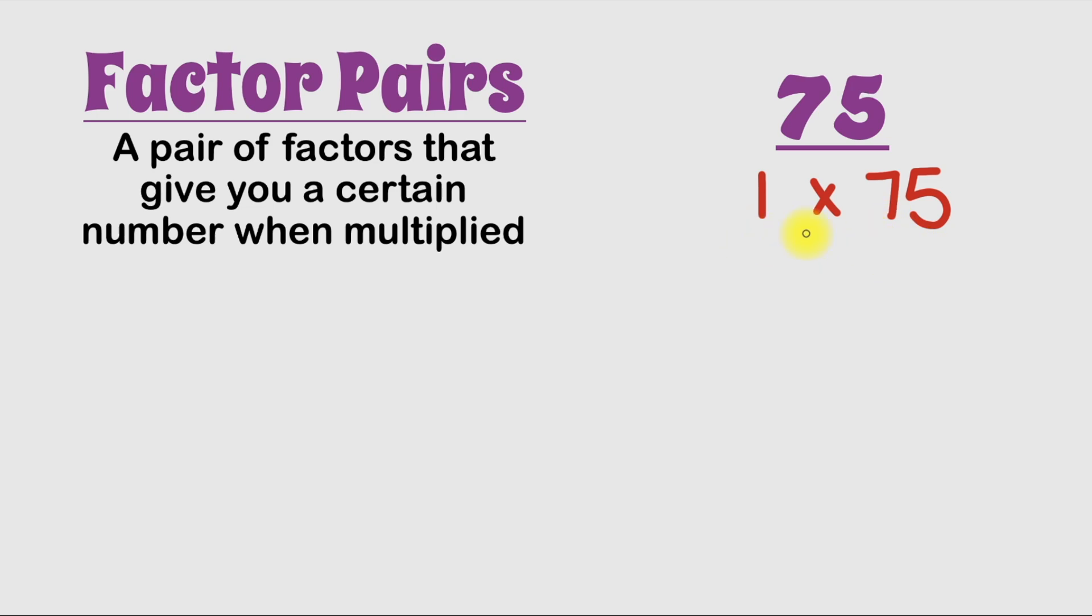After we start with this first factor pair, we should go to the number after 1 that can go into 75. 2 can't go into 75 because 75 isn't an even number. So let's go to the next number, which is the number 3.